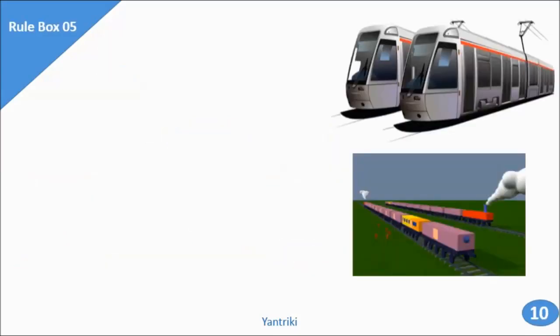Now let us move to rule box number 5. Here you can see two trains on parallel tracks. Unlike the previous case, these two trains are moving in opposite directions. For the same direction case and the opposite direction case — those who have watched my rule box number 3 and 4 will clearly understand: whenever two objects are moving in the same direction, we subtract the speeds.